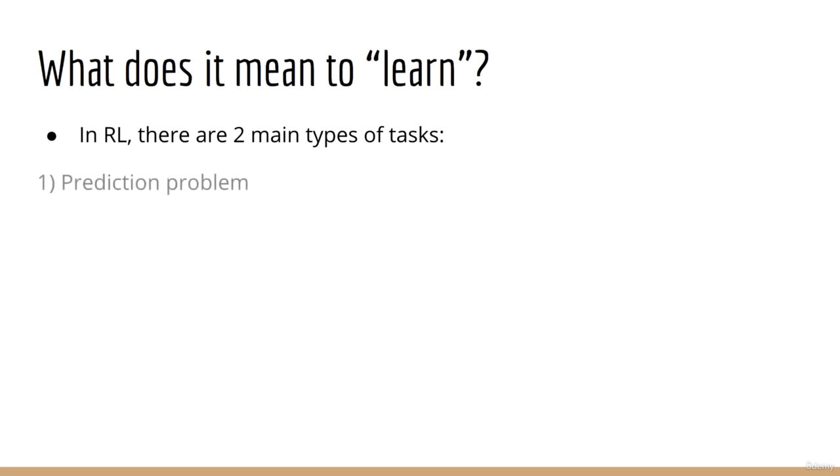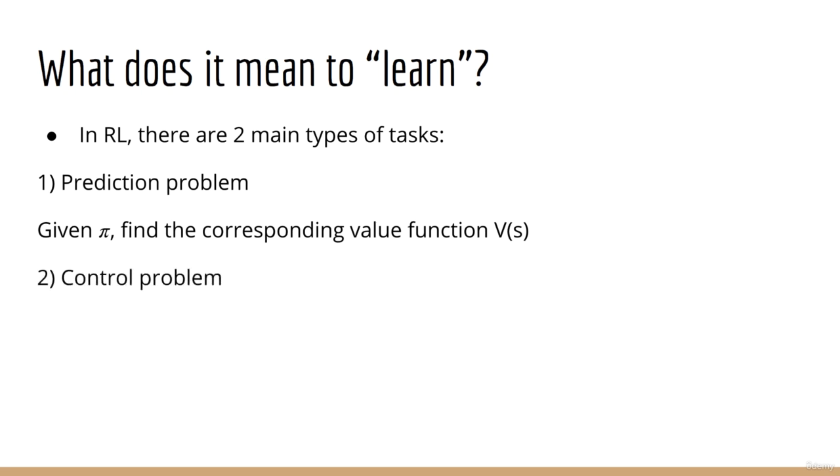Previously, we discussed what I called the prediction problem. That is, given a policy pi, find the associated value function v. The second type of task is called the control problem. This means to find the optimal policy pi which leads to the maximum v. In other words, the control problem is maximizing the sum of future rewards.